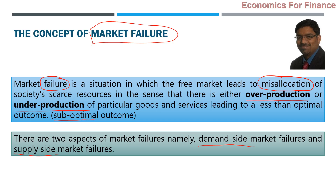Demand-side policies give tax cuts in indirect taxes — for example, if GST rates are reduced. Who gets benefited ultimately? Ideally, the final consumer, which means they will have more disposable income to spend. That is a demand-side policy — cutting indirect taxes is a demand-side boost. Cutting corporate taxes is a supply-side policy. Depending on government decisions, they implement any of these policies.